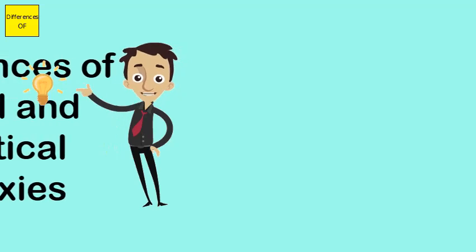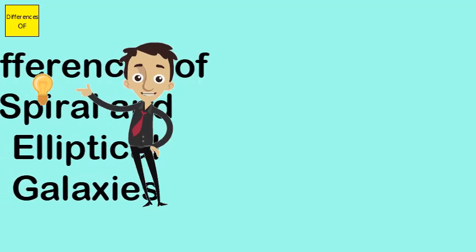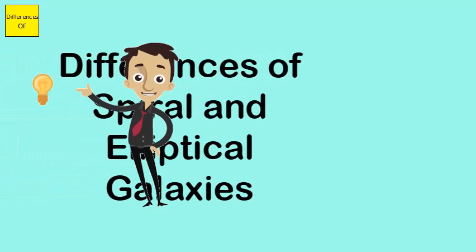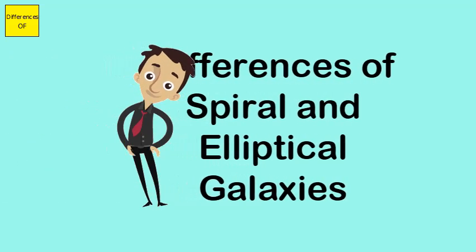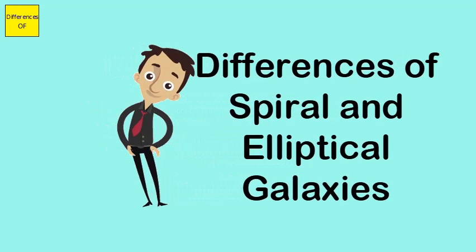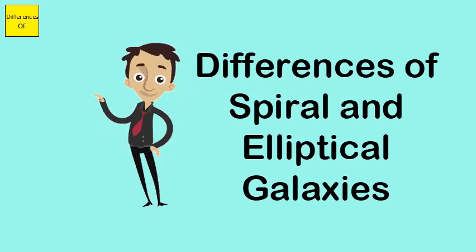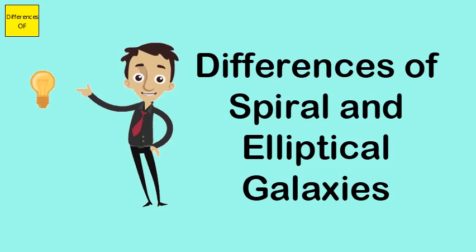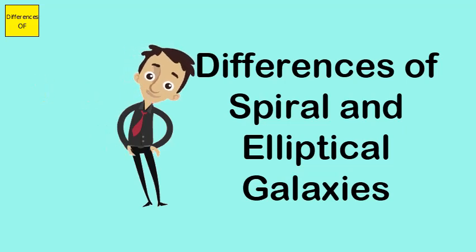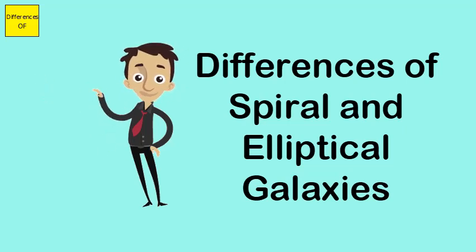Difference between spiral and elliptical galaxies. Spiral galaxies have a flat disk-like shape and a bulging center with spiral arms constituting the disk. Elliptical galaxies are ellipsoids with no clearly visible internal structure.